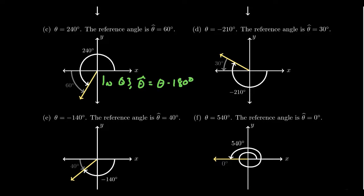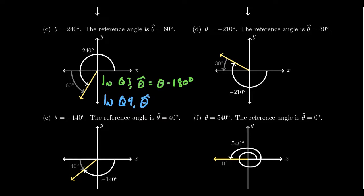What happens if you have an angle that terminates in the fourth quadrant? In the fourth quadrant, the reference angle is going to be how much more do you need to get to 360 degrees — how short of 360 degrees are you. So you take 360 degrees minus theta. That gives you the reference angle. As long as your angle is between 0 degrees and 360 degrees, you can use these four formulas on the screen to compute any reference angle.